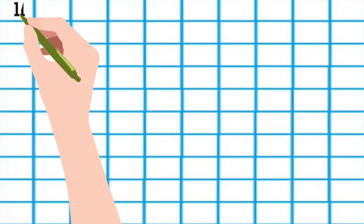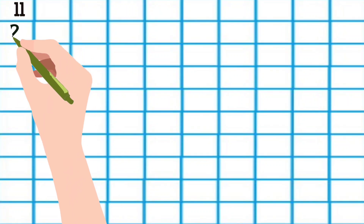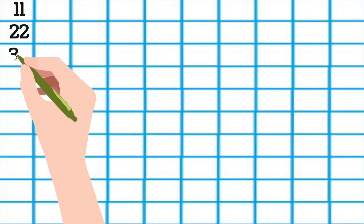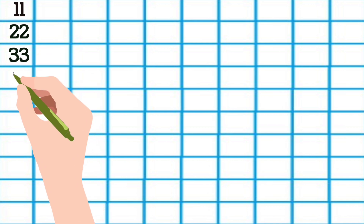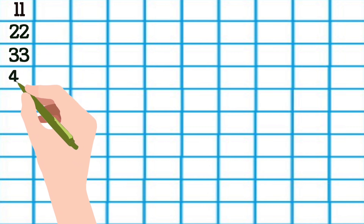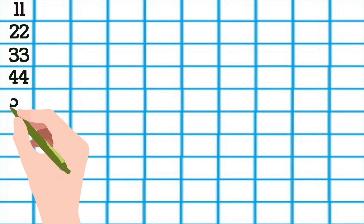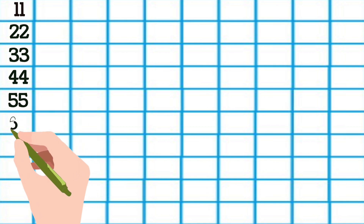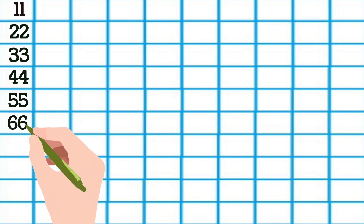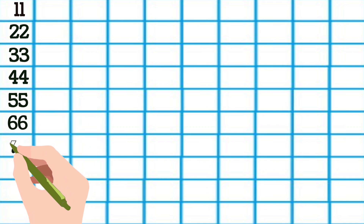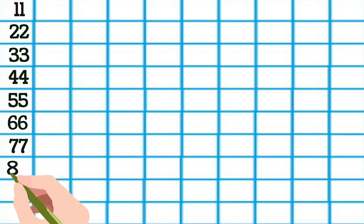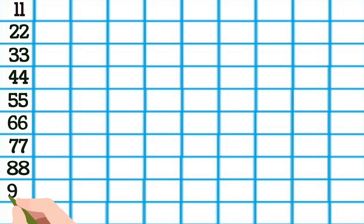11 1s are 11, 11 2s are 22, 11 3s are 33, 11 4s are 44, 11 5s are 55, 11 6s are 66, 11 7s are 77, 11 8s are 88, 11 9s are 99.